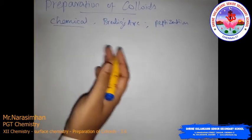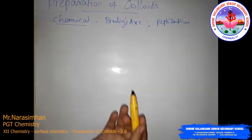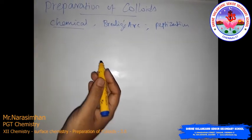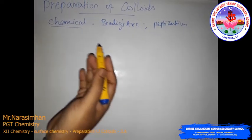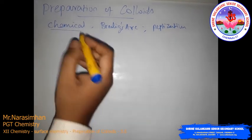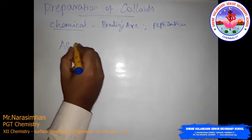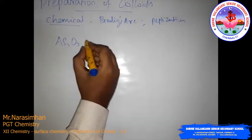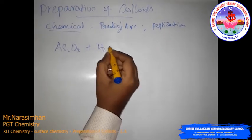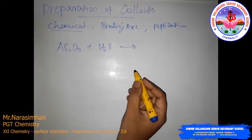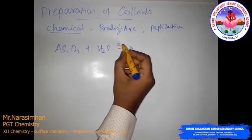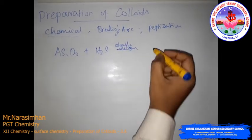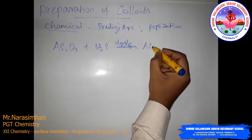The colloidal solution can be prepared using chemical reactions such as double decomposition, oxidation-reduction, or hydrolysis. For example, AS2O3 (arsenic oxide) reacts with hydrogen sulfide gas. It undergoes double decomposition to produce arsenious sulfide salt.